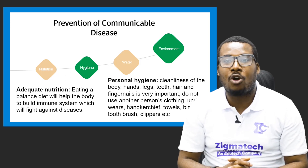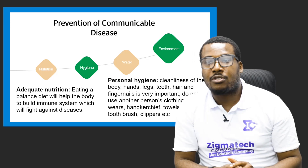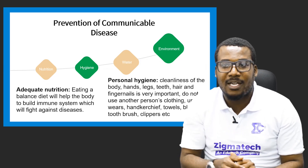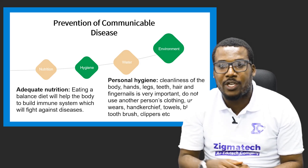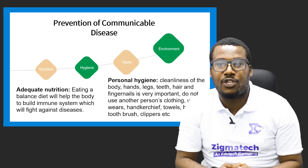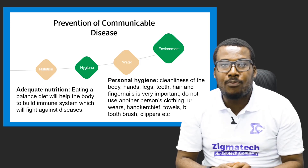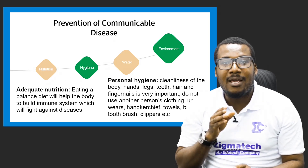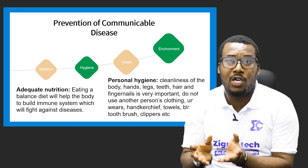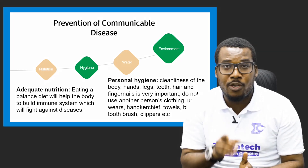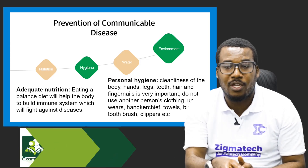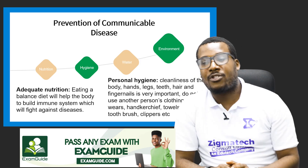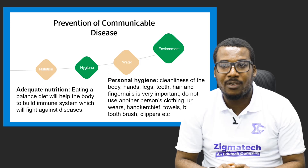The first prevention method is adequate nutrition. Eating a balanced diet helps the body build its immune system — your immune system is your soldier that fights diseases you cannot reach. You must boost your immune system so it can fight diseases head on. If you overwork your immune system by dealing with multiple diseases, it can work against you and cause secondary problems.